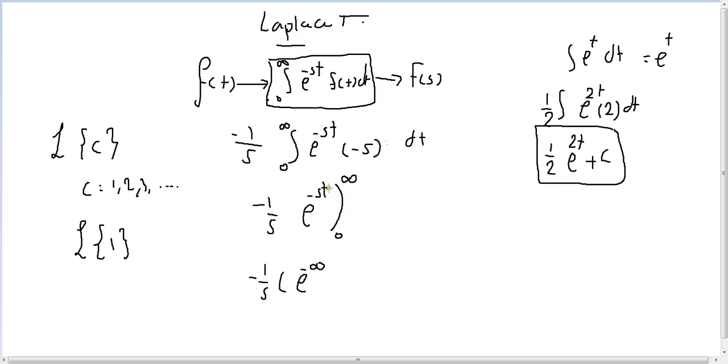Minus e to the bottom 0. This is equal to minus 1 over s, 1 over e to infinity exponential minus 1. And we know anything over infinity equals 0.